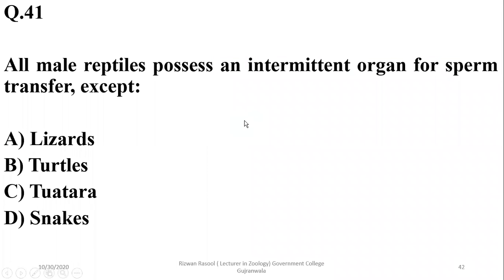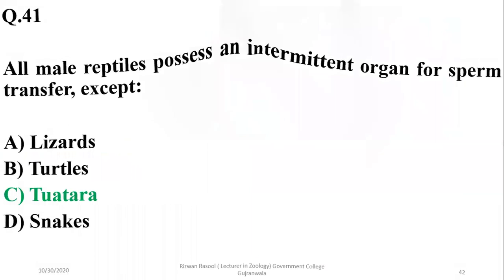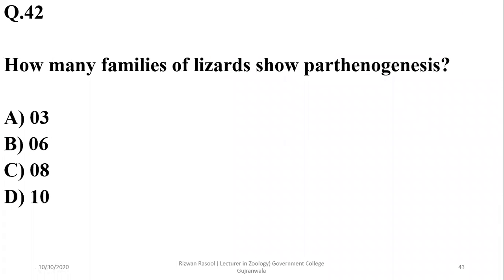Question forty: all male reptiles possess an intermittent or copulatory organ for sperm transfer, except tuatara. The correct option is charlie. Question forty-one: six families of lizards show parthenogenesis. The correct option is beta.